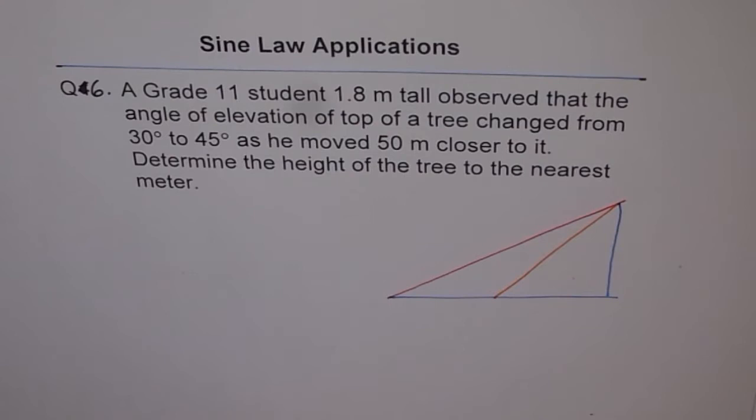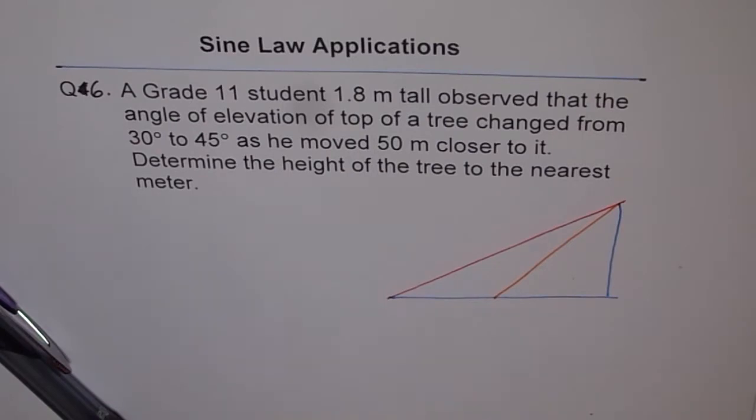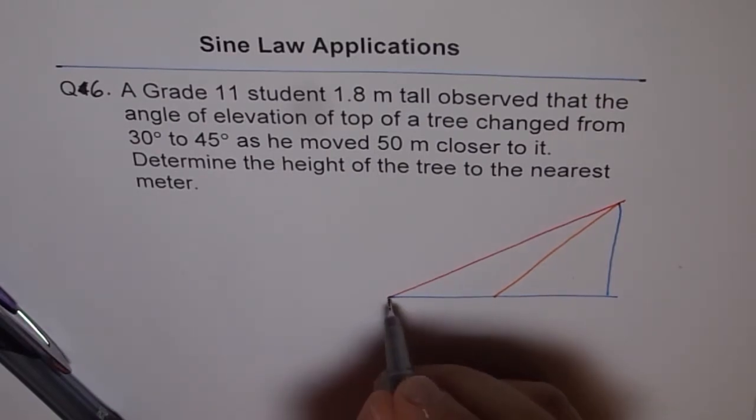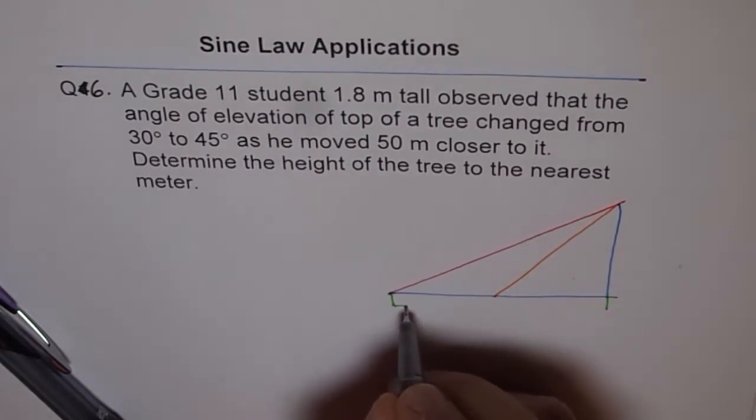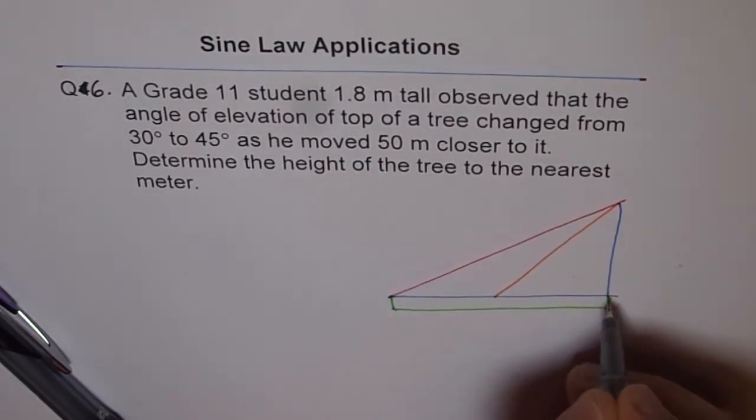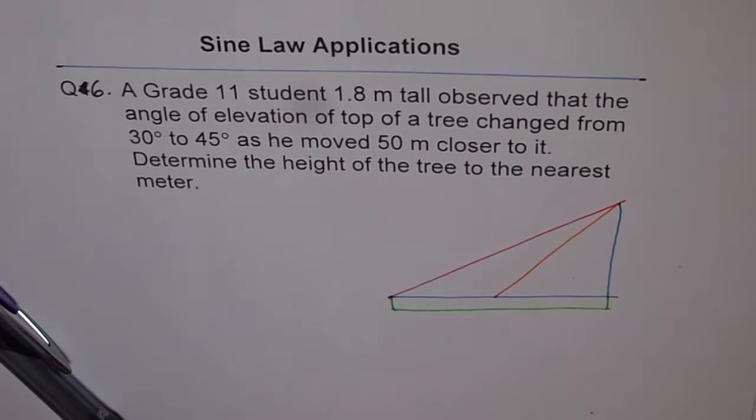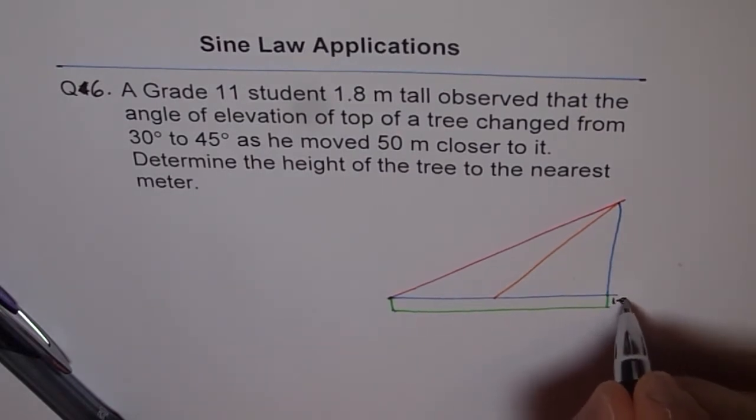Now the question says that the height of the student is 1.8 meters. So let's do one thing so that we don't really forget about it. Let's say that is 1.8, so that's the ground and that's the eye level from where we are observing. This is 1.8 meters, this height.